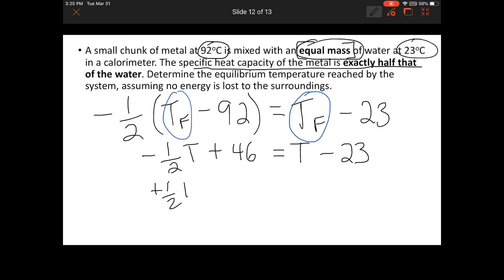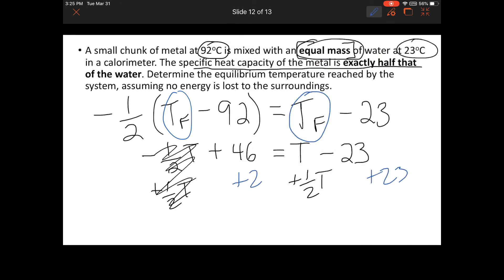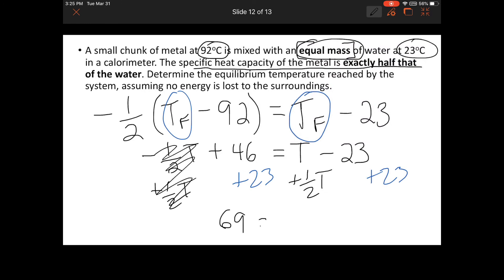I can add one-half T to both sides and add 23, which gives me 69 equals one and a half T. To isolate T, I'll multiply each side by the reciprocal, two-thirds. T equals two-thirds of 69, which gives a final answer of T equals 46 degrees Celsius.